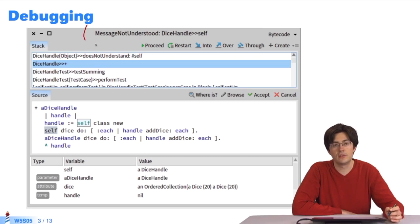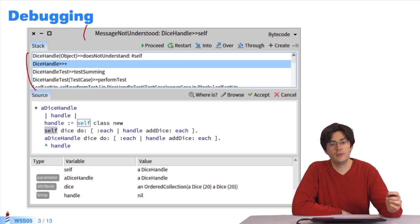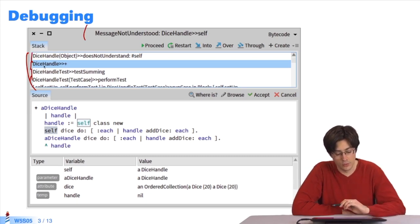There's a title bar indicating the error message. Here's the stack, the call stack. That's to say, the call method. Here we can see that this method, performTest, has called method testSumming, which has called the method plus, which has raised the problem does not understand.